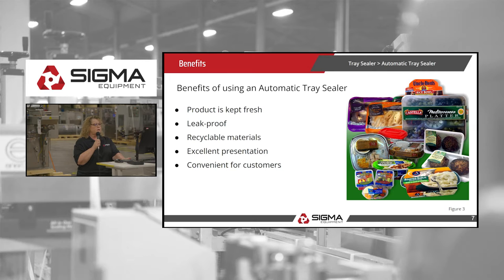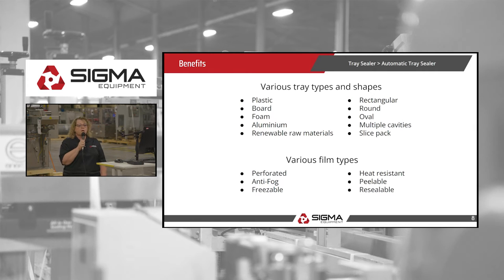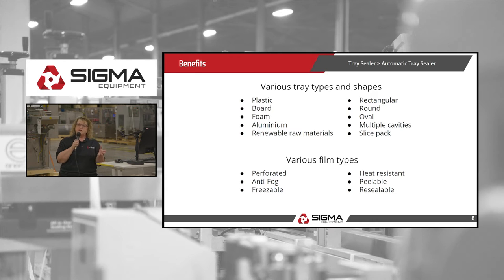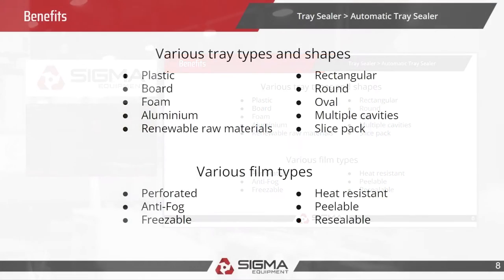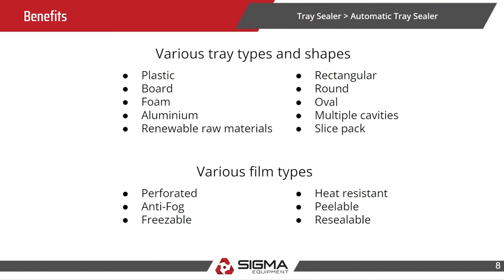When I first got this category I thought it would be pretty clear cut, but once I dug into it a little bit, as with most categories, it is more complicated than just a tray with product in it that's sealed. There are so many different variables: the type of tray — plastic, board, or aluminum — they can be round, square, or oval, and have multiple cavities. The film can be heat resistant, peelable, resealable, or perforated, and the list goes on.